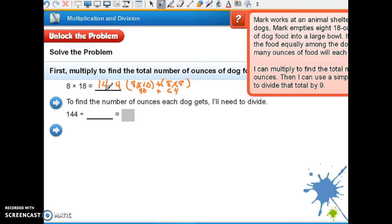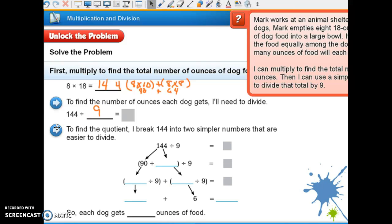A four, and then six plus eight is 144 ounces. So 144. How many dogs were there? 9, so we're going to divide by 9. To find the quotient, I break 144 into two simpler numbers. They're doing 90 and what? What's 144 minus 90? 54. So 90 divided by 9 and 54 divided by 9. What is 90 divided by 9? 10. And 54 divided by 9? 6. So 10 plus 6 is, so each dog will get 16 ounces of food.